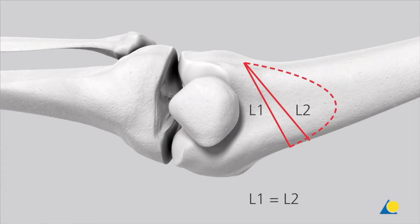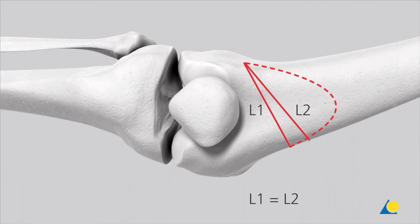A biplanar osteotomy is planned where the transverse plane is perpendicular to the dorsal and medial cortices. The direction and location of the cuts are important for primary stability following the osteotomy. For a high level of stability to be achieved, it is important that the transverse osteotomy is isosceles, which ensures full cortical contact after the osteotomy is closed. It is also important that the transverse osteotomy is oblique, which maximizes the contact surface.